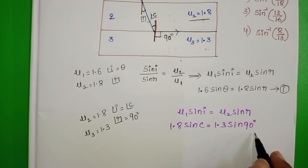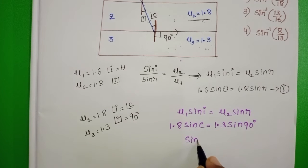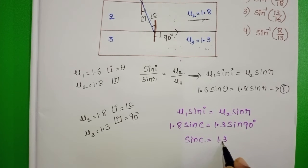Sin 90 degrees value equals 1. So sin c equals 1.3 by 1.8.